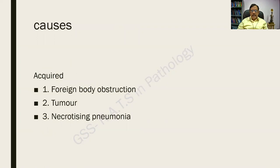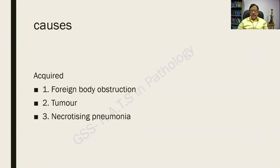The acquired causes are: one, foreign body obstruction; two, obstruction due to a tumor. Foreign body obstruction is common in children and tumors in elderly people. Both act as ball valves — they allow flow of air into the bronchial tree but prevent it from going back, resulting in accumulation, pressure stasis, and distension. Another condition is necrotizing pneumonia, in which inflammation causes weakening of the walls.